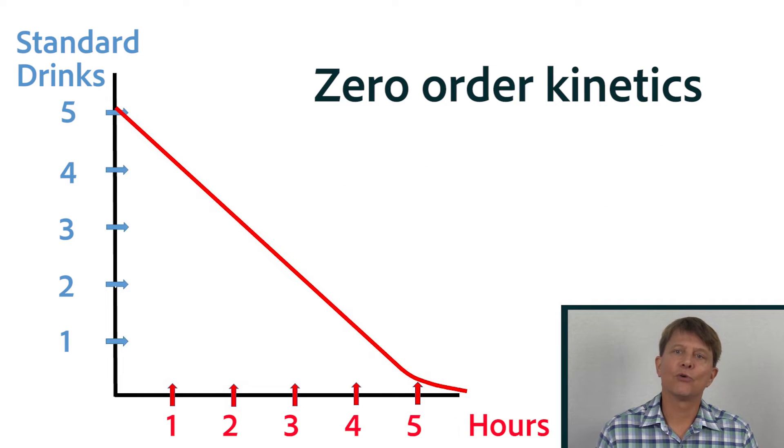So for alcohol with zero-order kinetics, we estimate that approximately one standard drink is metabolized per hour, rather than saying that it has a half-life of X hours, like we say with most drugs.